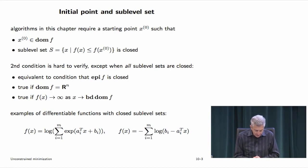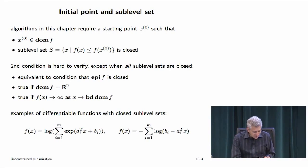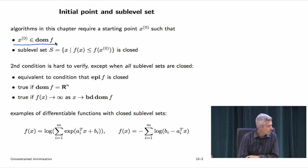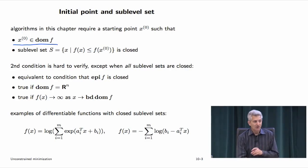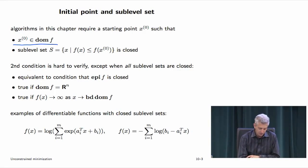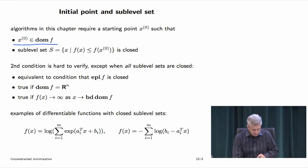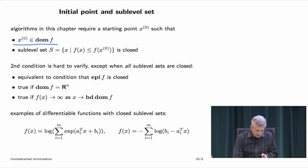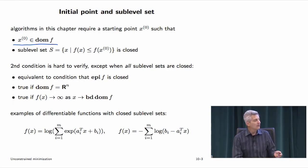There are a couple of important assumptions. First, you have to start with a point in the domain. Often that's easy — if the domain is all of R^n, you pick any point; if it's R+^n you might start from the vector of all ones. But in some cases it may not be easy to find a point in the domain. We will later see methods that work even if you don't know a point in the domain.